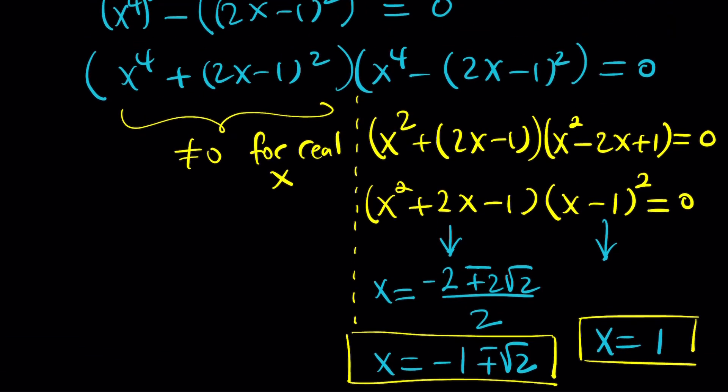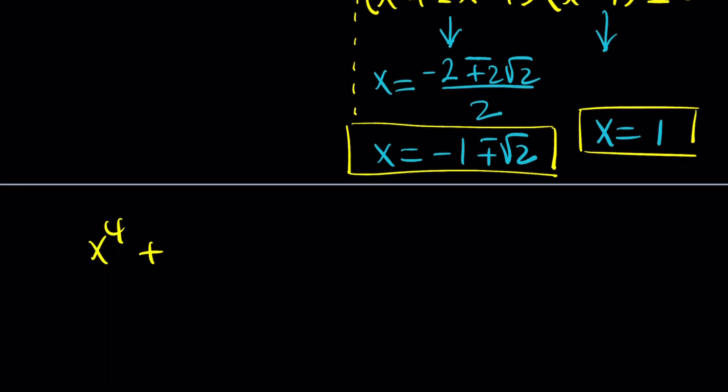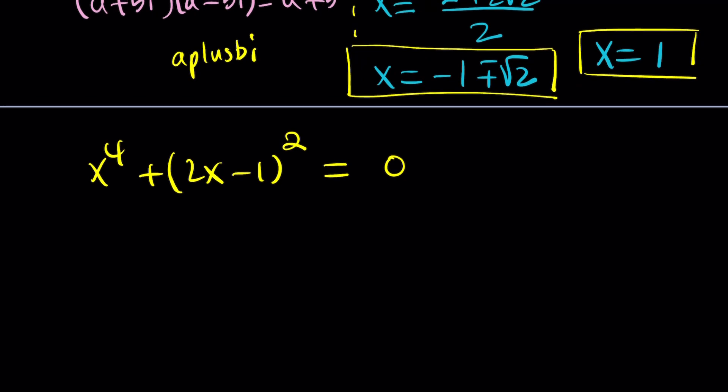Those are the real solutions, but are those the only real solutions? Yes. But how do we find complex solutions, solutions that are not real in this case? So to be able to solve this problem, let's go ahead and consider the following. x to the 4th plus, in other words, this is not a difference of two squares, it's a sum of two squares. And if you think about complex numbers, when we multiply two conjugates, then we get a sum of two squares. So that should give you an idea about how to factor sum of two squares. But I'm going to show you an alternative method here.